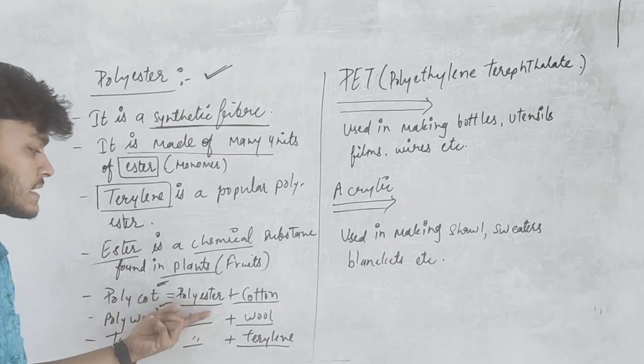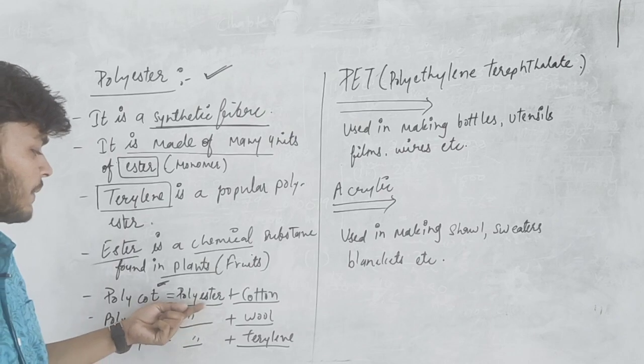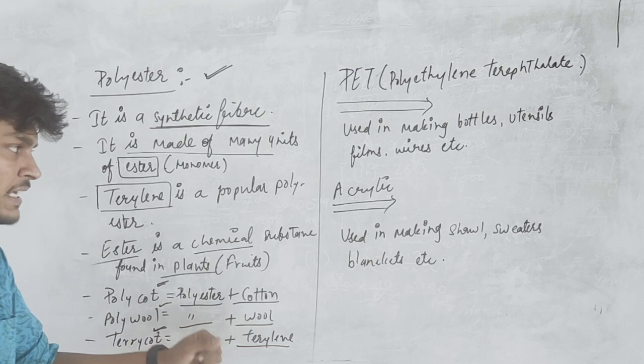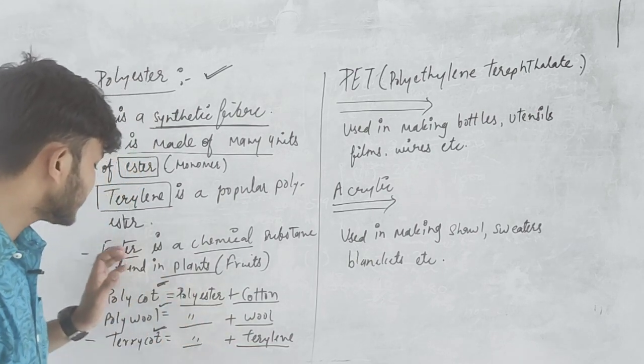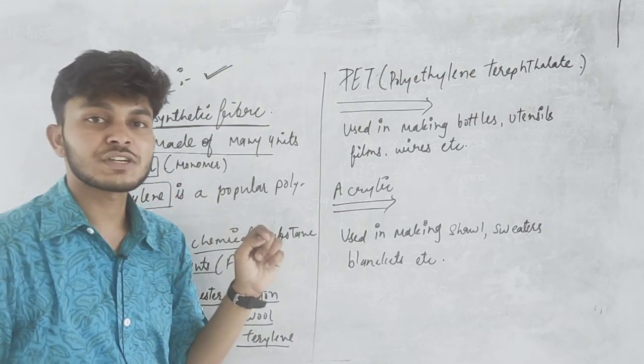Polycote is polyester and cotton. Terricote is polyester and terylene. These are some certain examples of polyester.